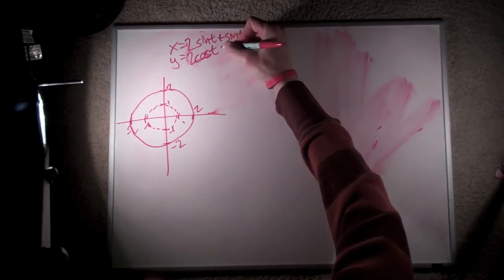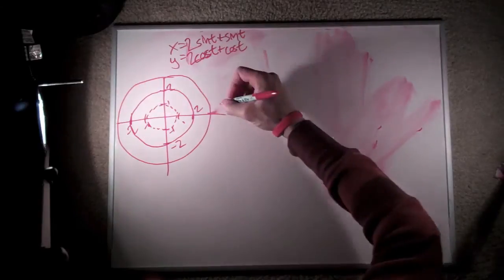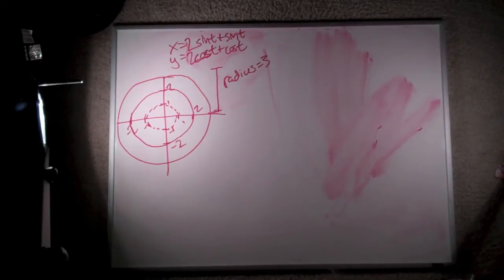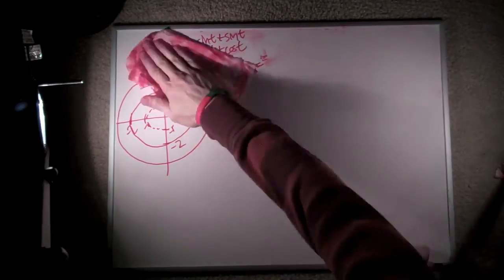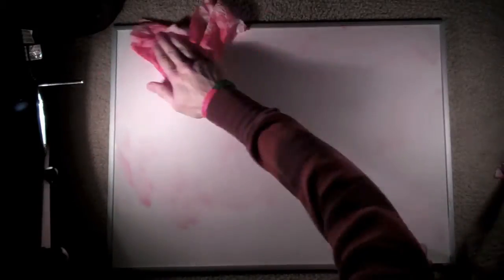But wait, we can now add an additional term on top of it. We can say x = 2sin(t) + sin(t), y = 2cos(t) + cos(t), and now we've created a graph wherein the radius is 3, and 2sin(t) and 2cos(t) have become the terms that describe the size of the hand path.